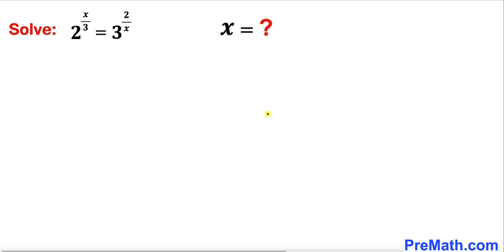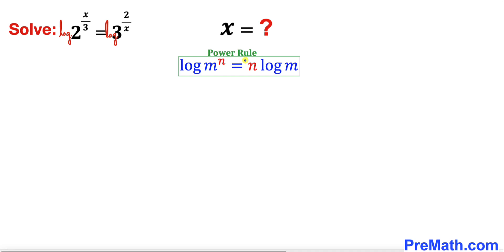Let's go ahead and get started with the solution. The very first step is to take a log on both sides of this equation — log on the left hand side and log on the right hand side as well. Now let's recall the power rule: we can bring these exponents all the way to the front.